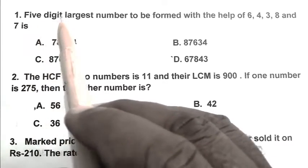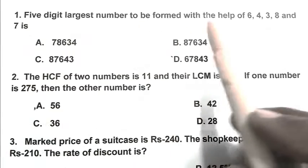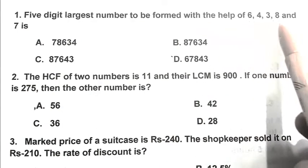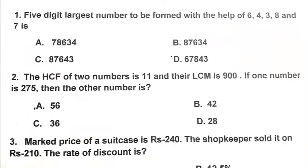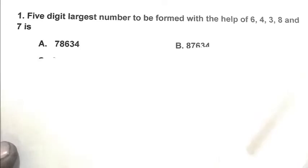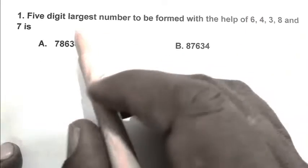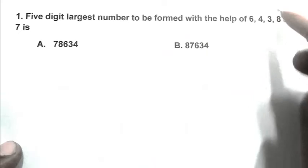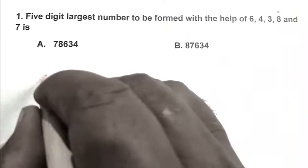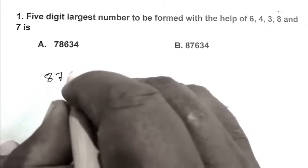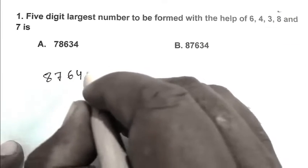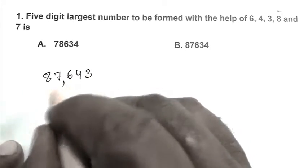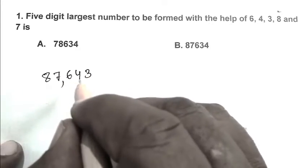Question number 1: Five digit largest number to be formed with the help of 6, 4, 3, 8 and 7 is? So friends, we have to calculate the largest 5-digit number, so we have to write the largest digit first. So we write 8 first, after that 7, after that 6, after that 4, after that 3. So friends, 87,643.